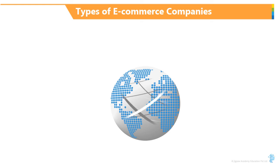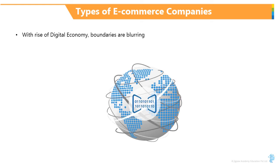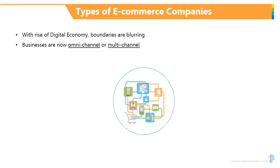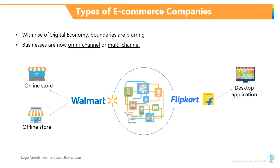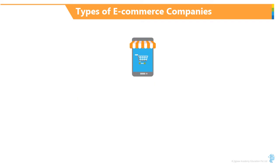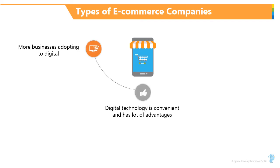With the rise of digital economy, the boundaries are really blurring. A lot of businesses are now omnichannel, multichannel. For example, Walmart has online stores as well as offline. Flipkart offers you products on your desktop and you can download their mobile app as well and buy there. More and more businesses are adopting digital because of the convenience and other advantages which it brings.